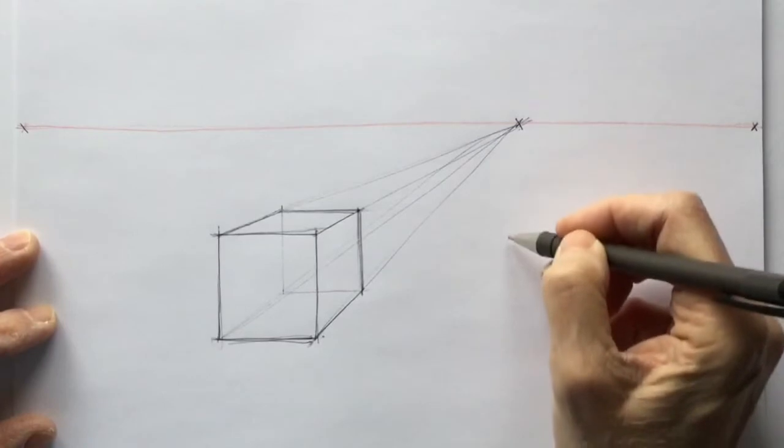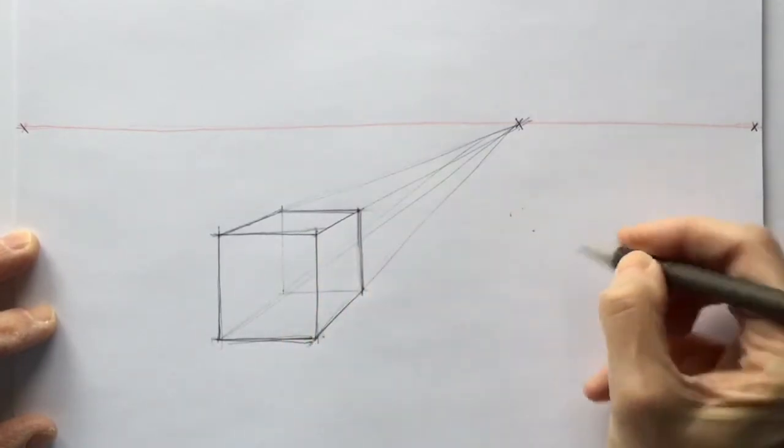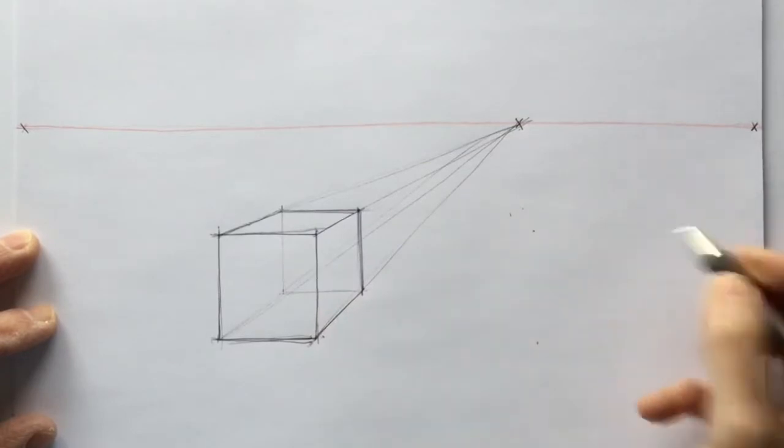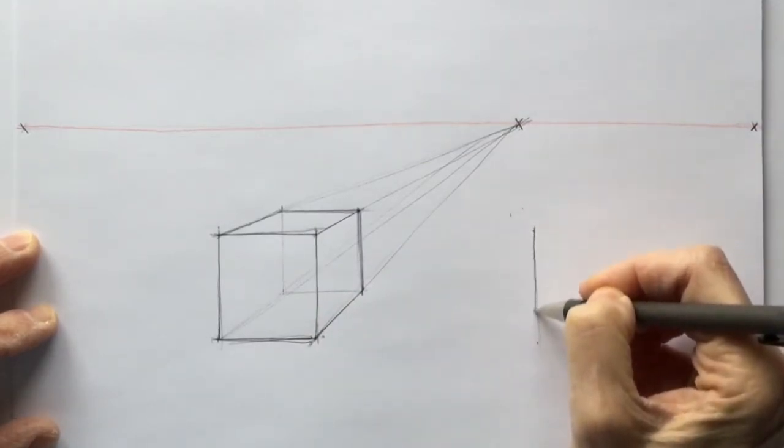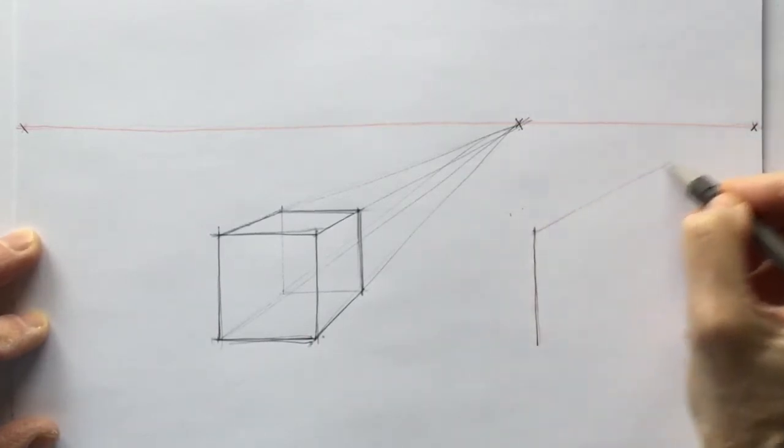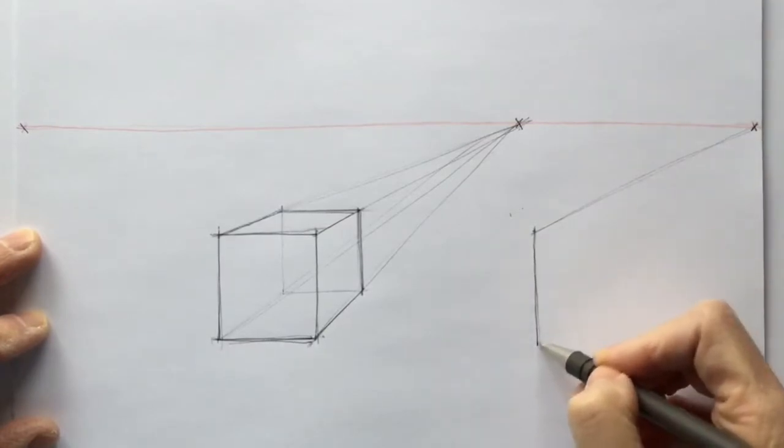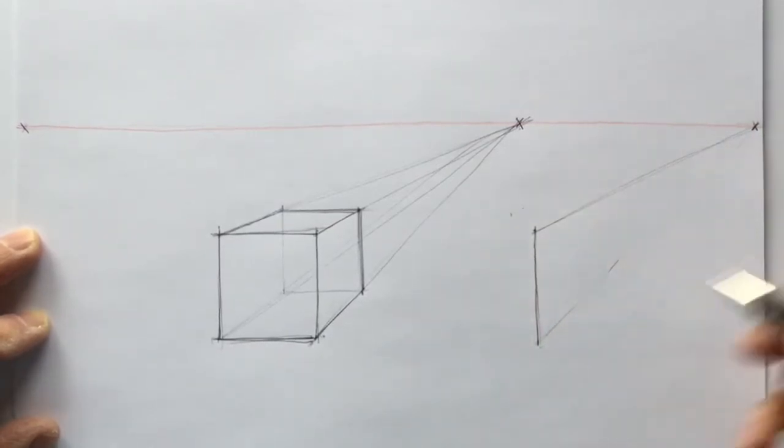Now I'll put in the two-point box. I'll try to get it maybe in the same, sort of the same. That's another example of something that's important to do. Estimating proportion and scale relative to what's already on the page. That other box. I'm relating the size of this to that other box.